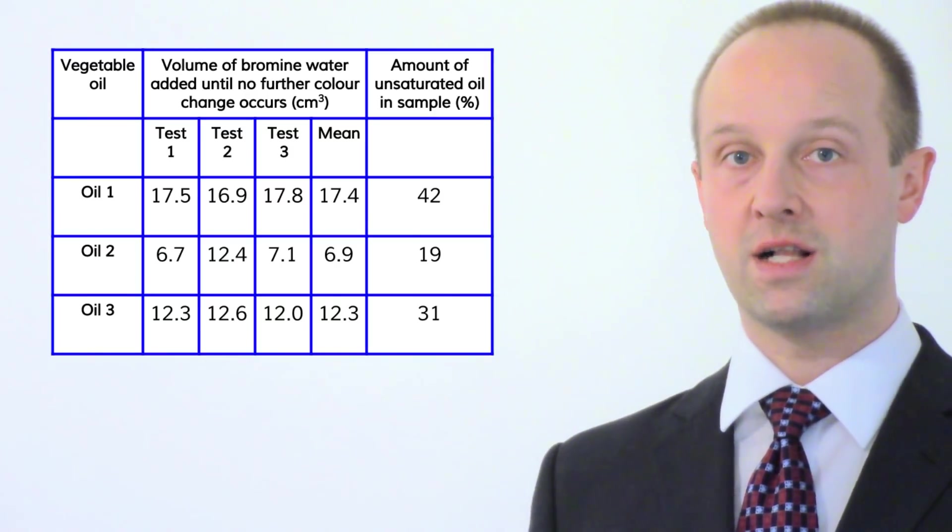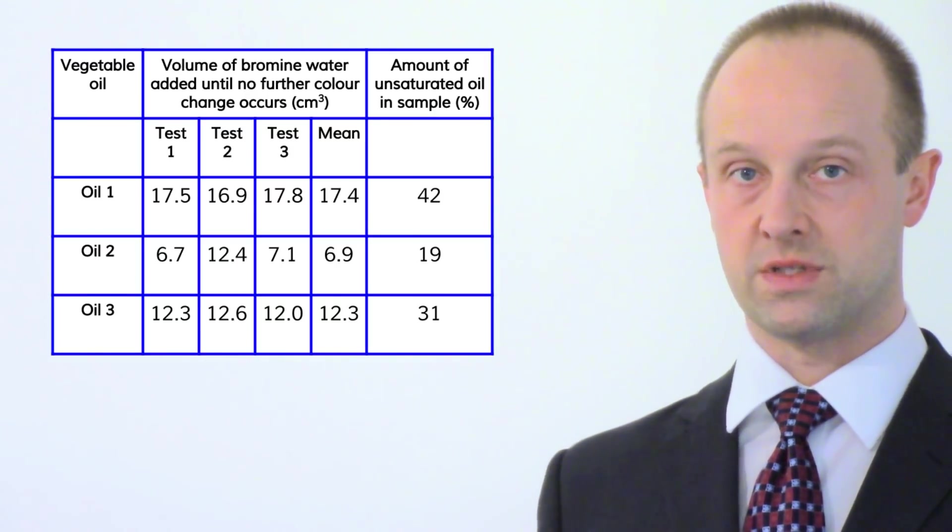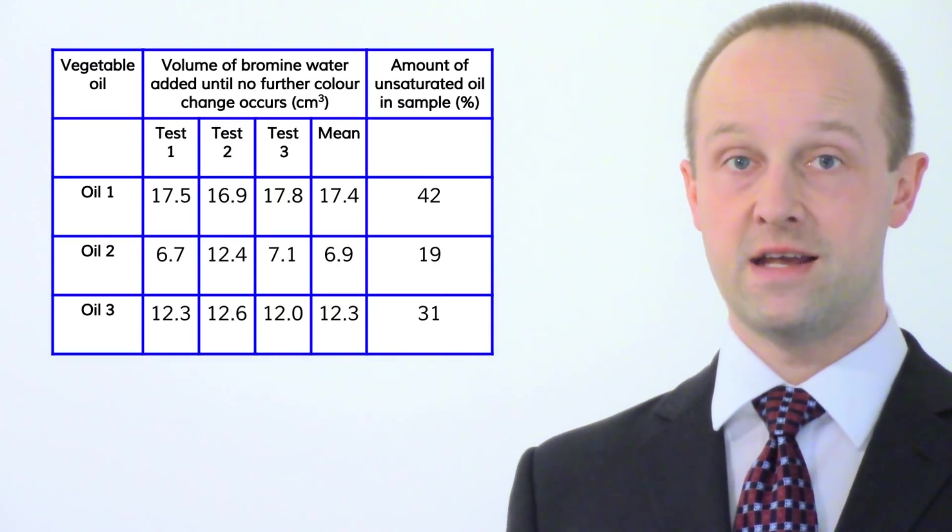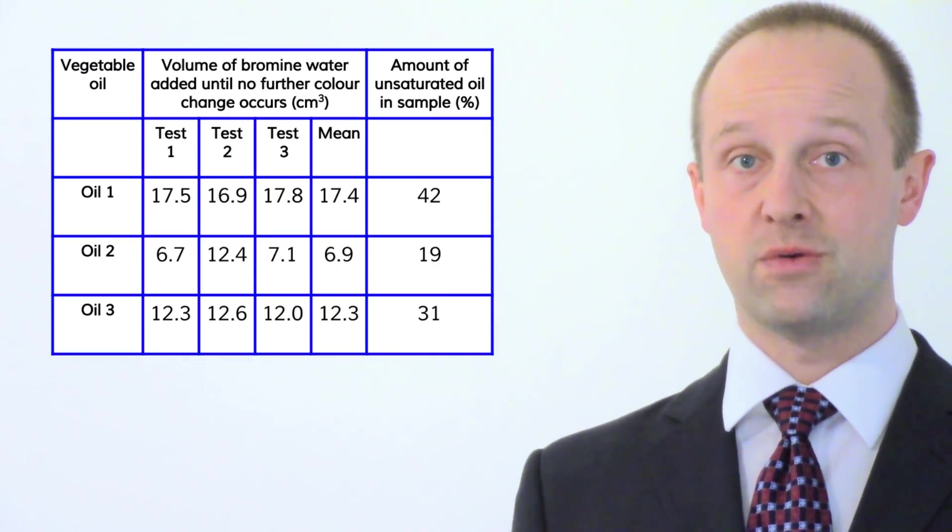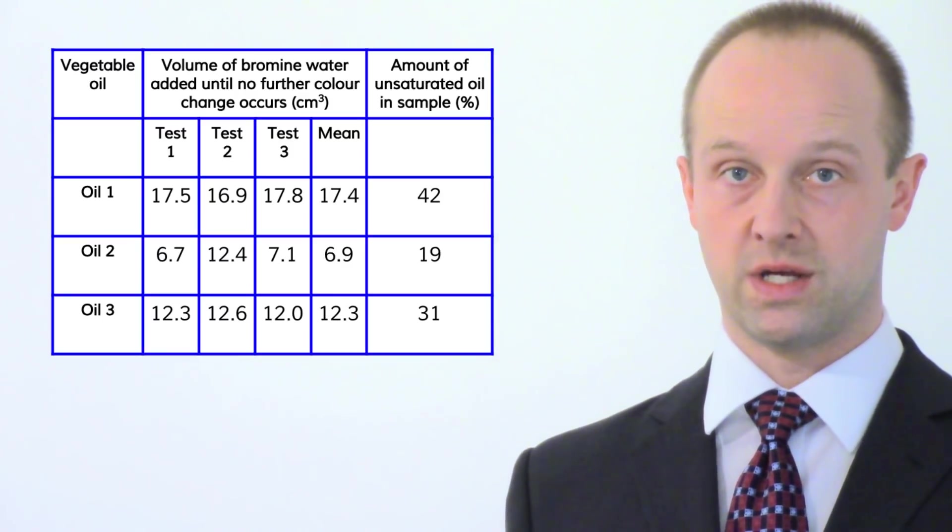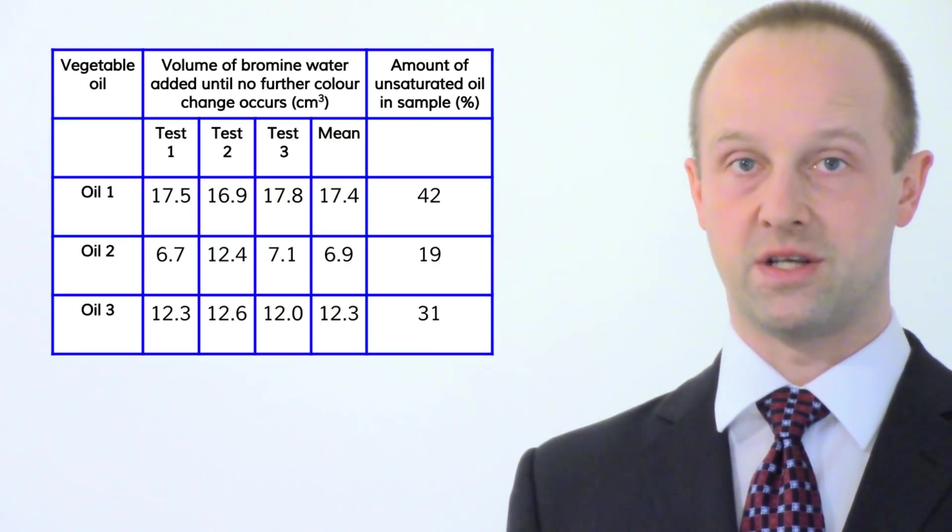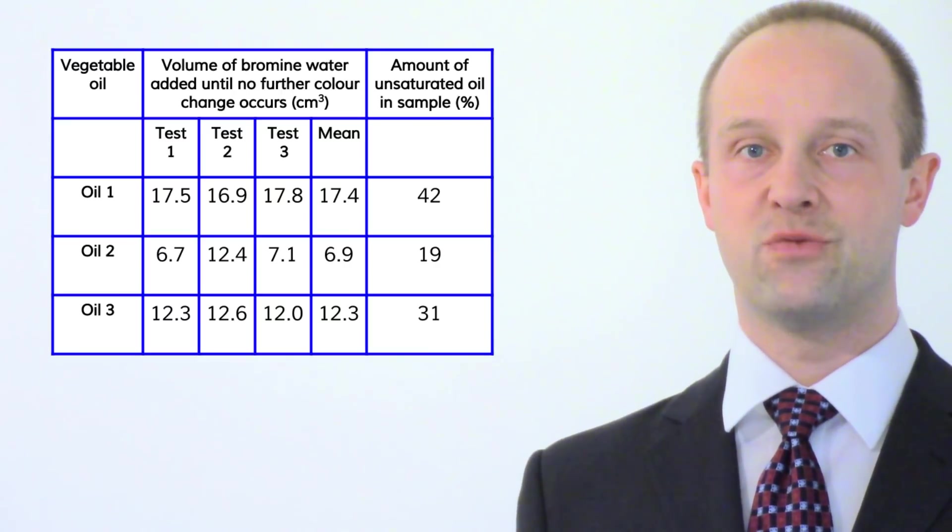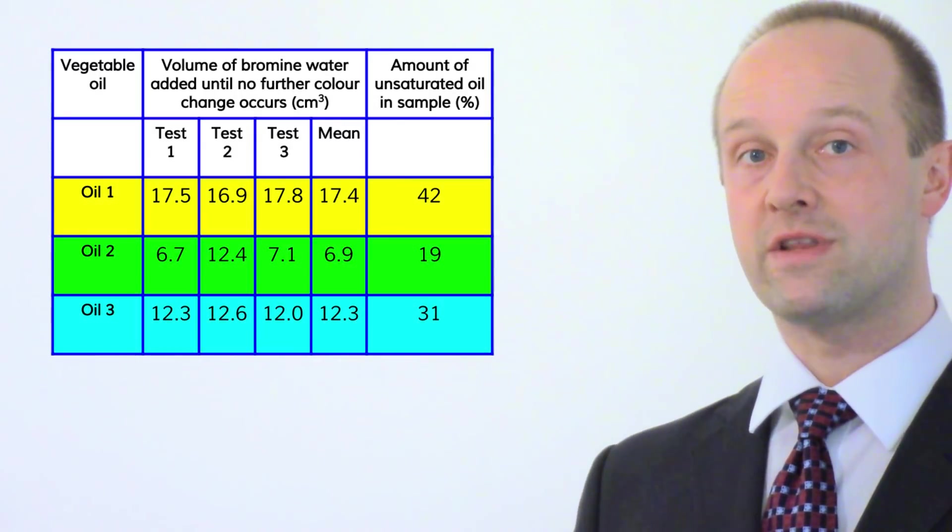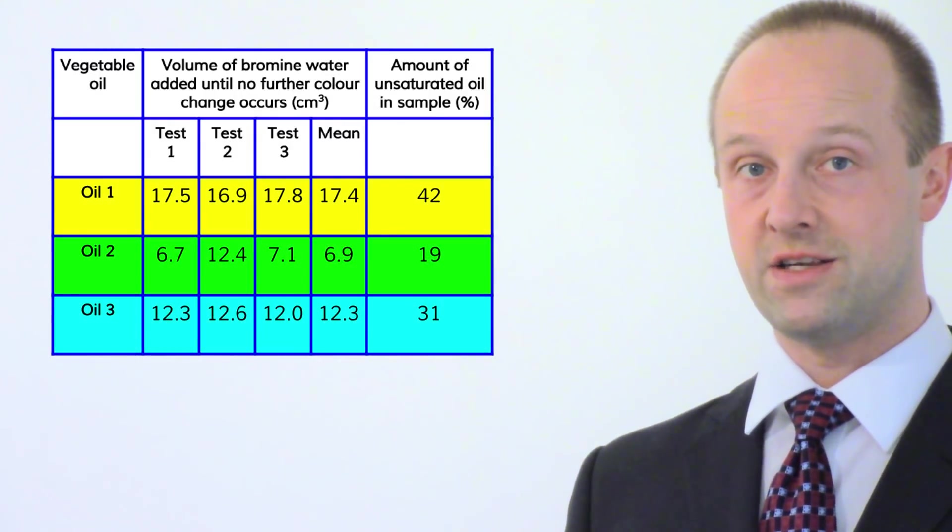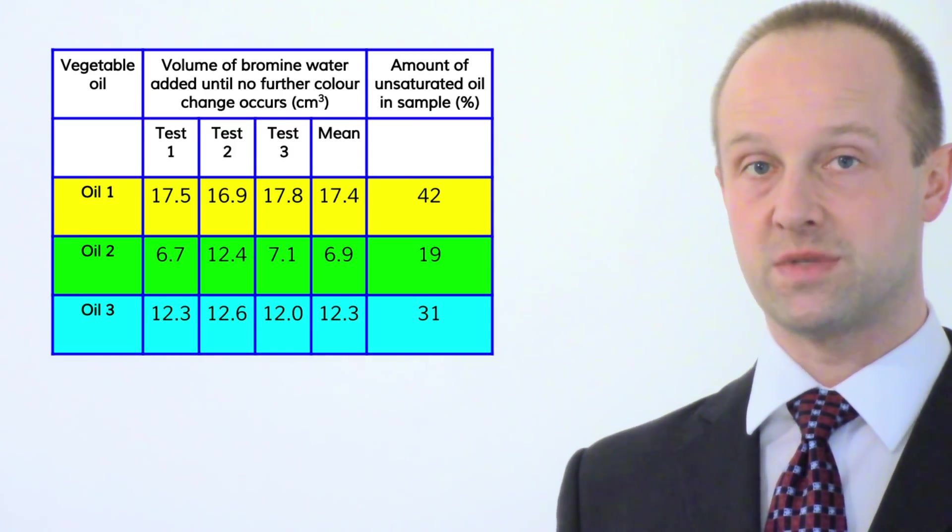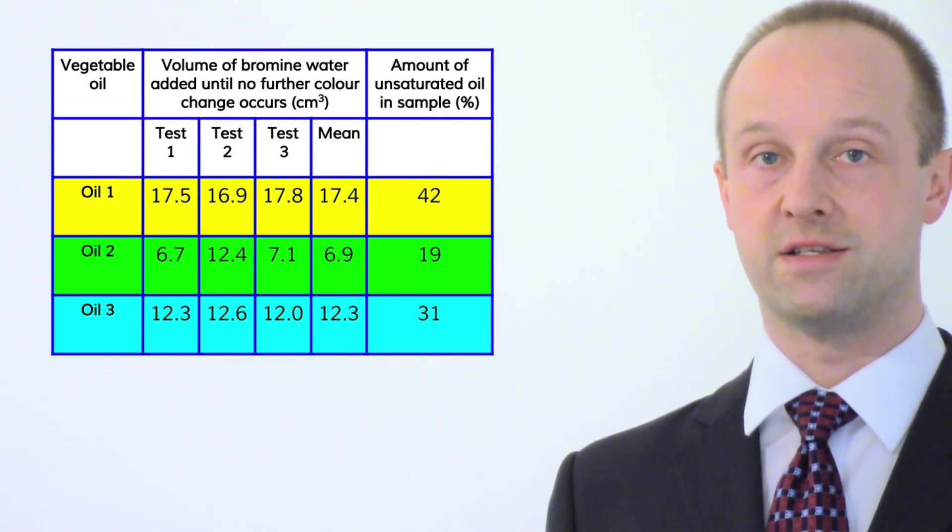You don't even need to know any more details of the question to be able to start making some sense of this. It's a lot clearer though if we separate those different oils out. The oils are our independent variable here and they're each on a different row. Generally speaking your independent variable will be on separate rows, so look for the things going horizontally.